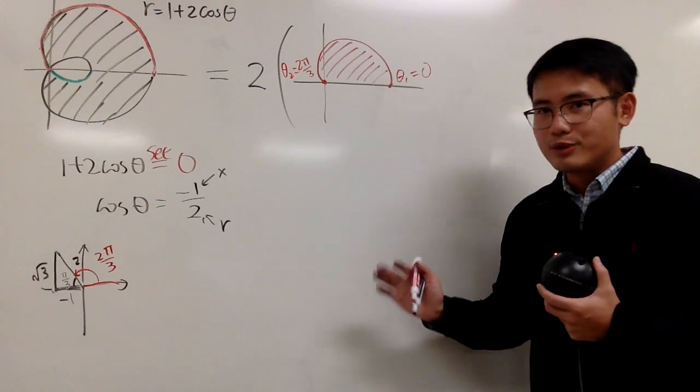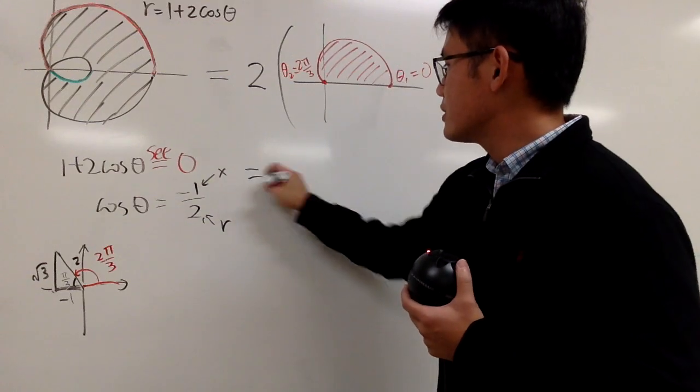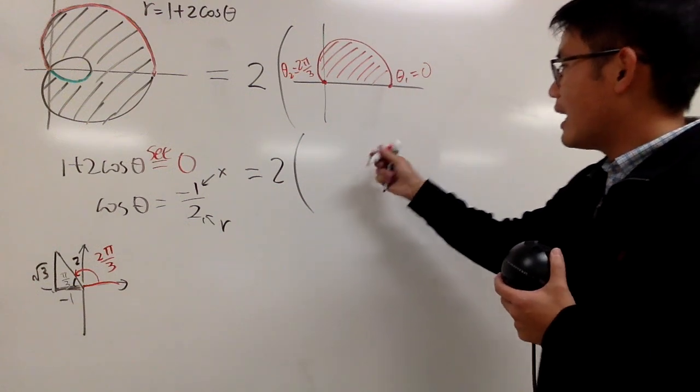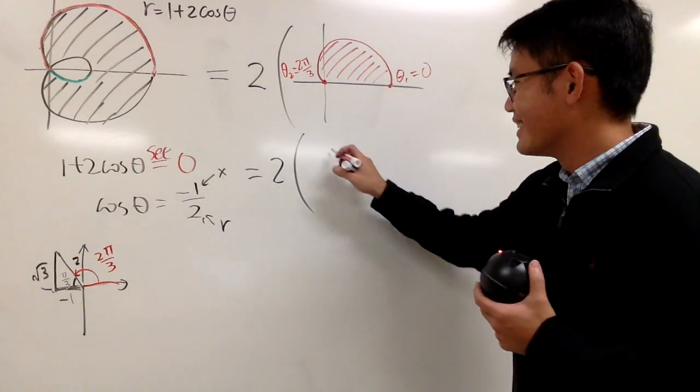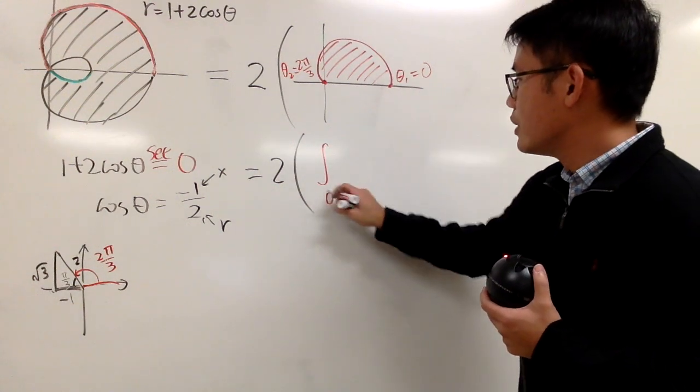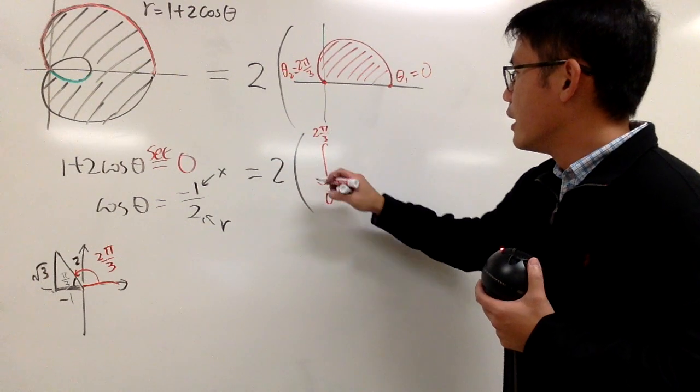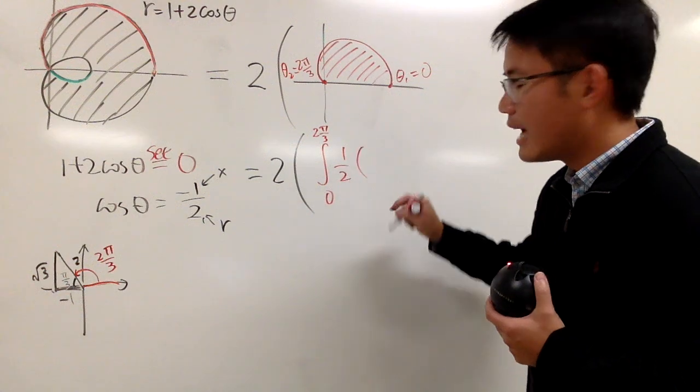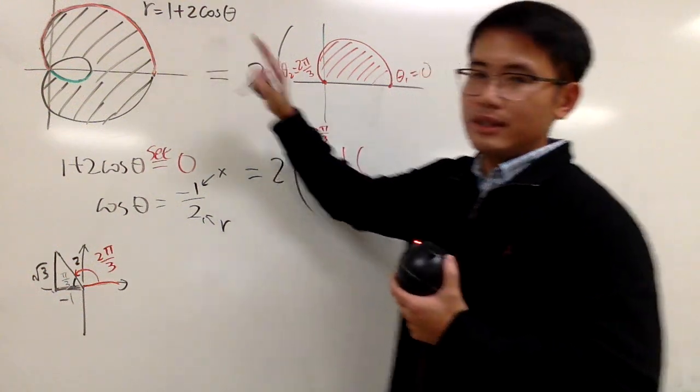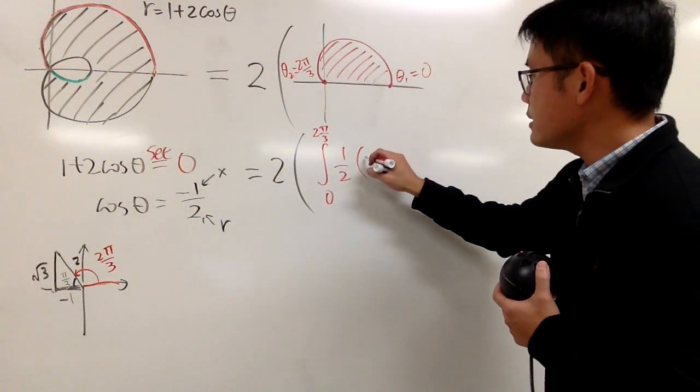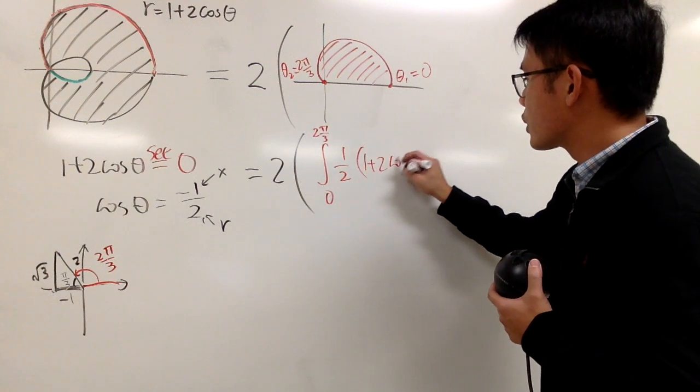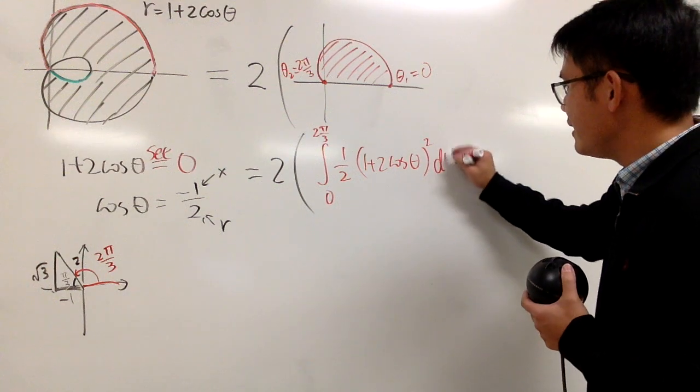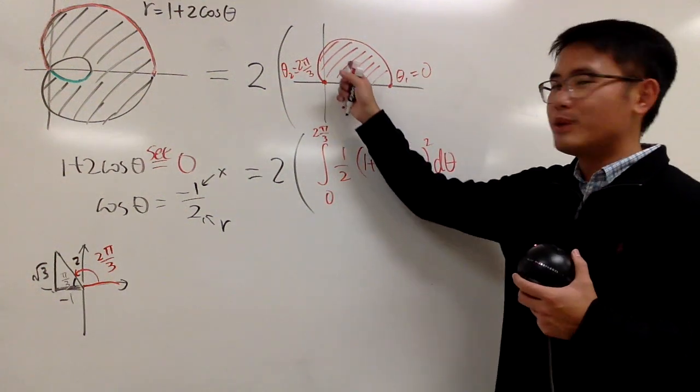Once you have angle 1 and angle 2, this right here is actually pretty easy now. So don't forget the 2 all the way in the front. And for this area, I will just put down the integral in red. We go from 0 to 2 pi over 3. And then remember the formula is 1 half times r squared, and r is this. So you're just going to enter that into the parentheses. 1 plus 2 cosine theta, and then don't forget the square. And then of course d theta. This will calculate the area right here, right?